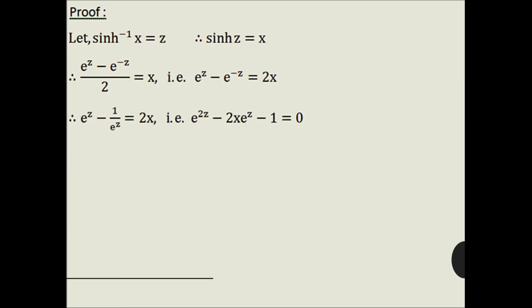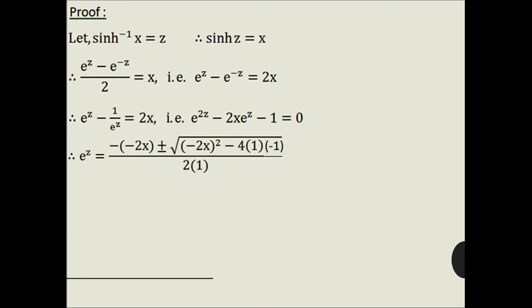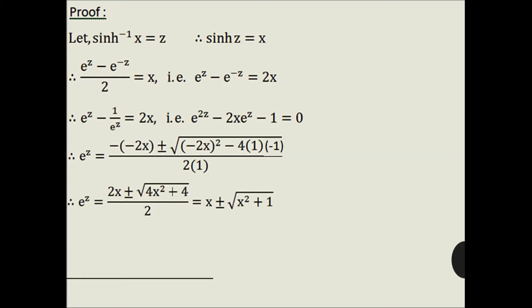Take 2x to the left-hand side. So we get e^(2z) − 2x·e^z − 1 = 0, which is a quadratic equation. Hence we can find e^z by the formula (−b ± √(b² − 4ac)) / 2a. We get e^z = (2x ± √(4x² + 4)) / 2, that is e^z = x ± √(x² + 1). But √(x² + 1) > x, so we cannot take x − √(x² + 1) because taking log would give a negative value, which is not possible. Therefore z = log(x + √(x² + 1)).